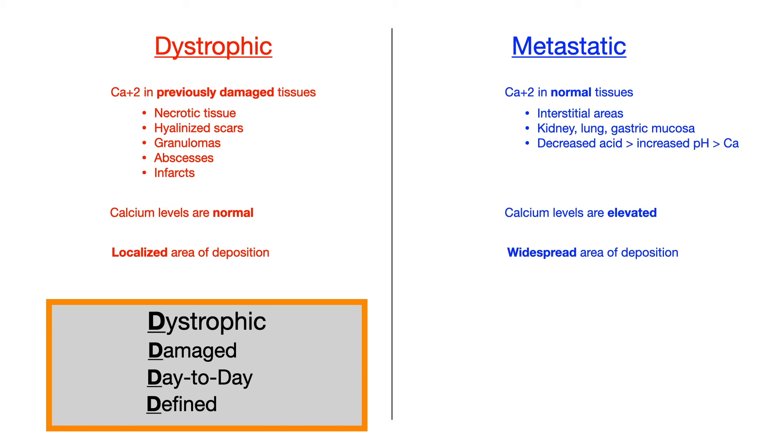Dystrophic calcification occurs in damaged tissues, you maintain your day-to-day calcium levels, which in other words, day-to-day meaning normal calcium levels. And it has a very defined or localized area of deposition. So dystrophic equals damaged equals day-to-day calcium levels, i.e. normal, and defined, i.e. localized area of deposition.